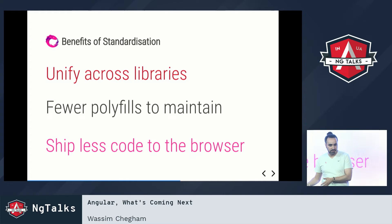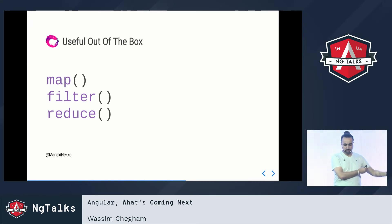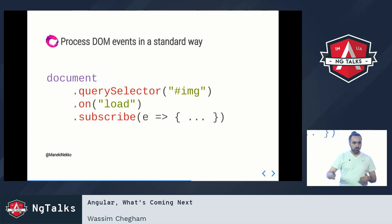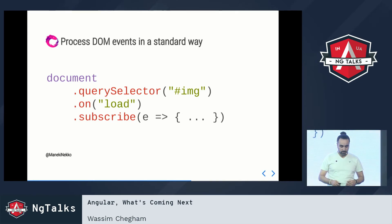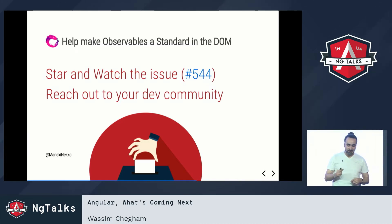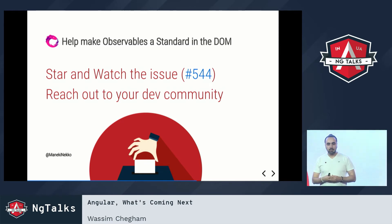Imagine having all these operators out of the box directly in the DOM — just write map, filter, reduce. Basically, the proposal says you could query a DOM element, for instance an image with an ID, call the on method with the load event, subscribe, and you have a stream. That would really be fantastic. If you're excited about this, please check the issue on GitHub, and if you know developers from other communities like React or Vue, show them the issue and let the team know your feedback.